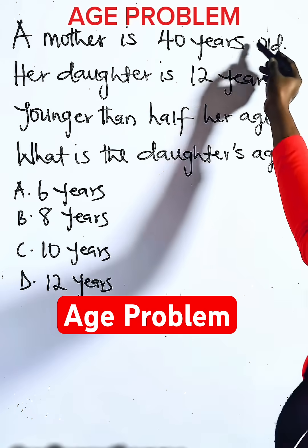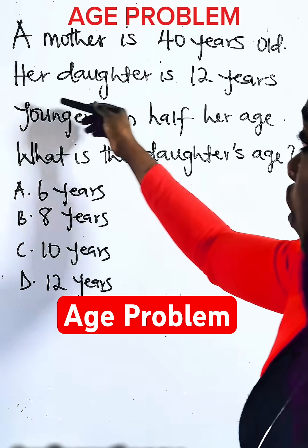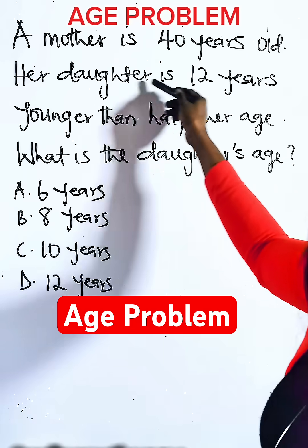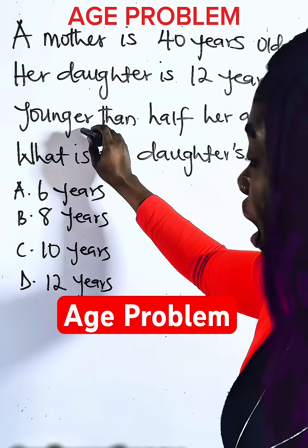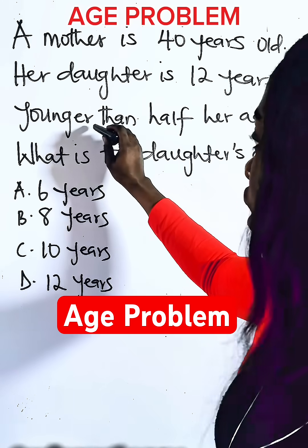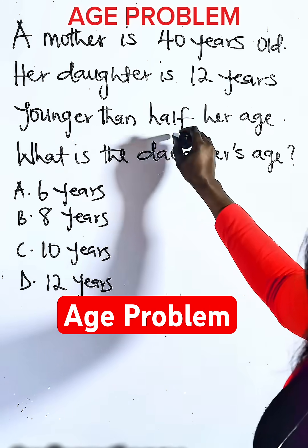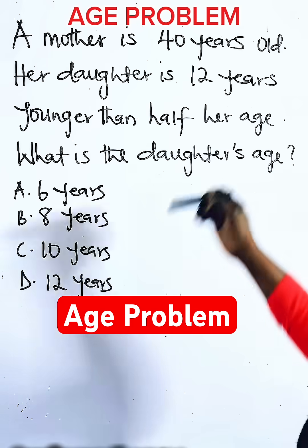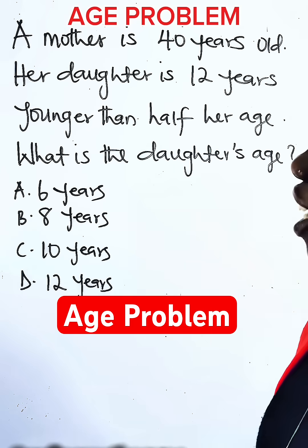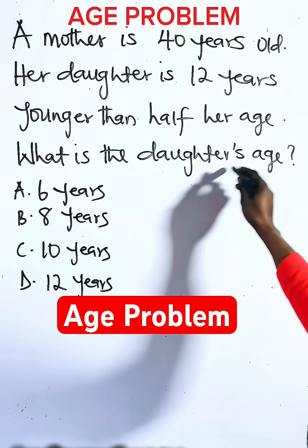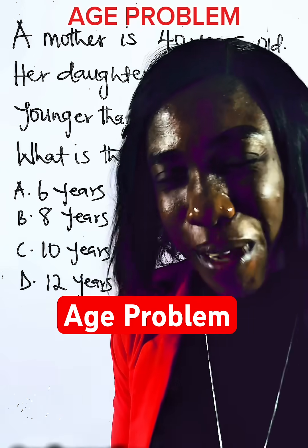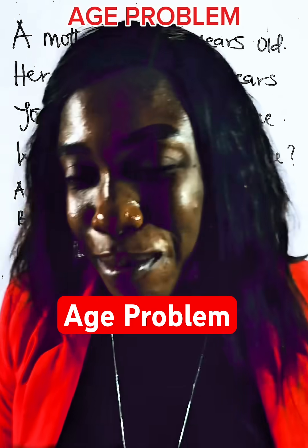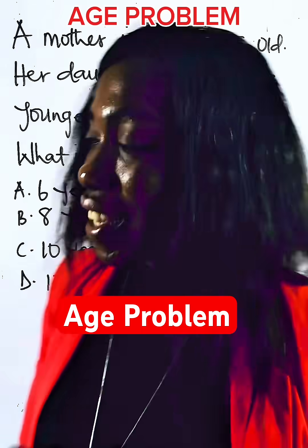A mother is 40 years old. Her daughter is 12 years younger than half of her age. What is the daughter's age? Don't start panicking — let me teach you what to do.